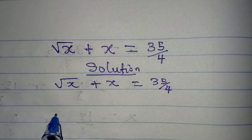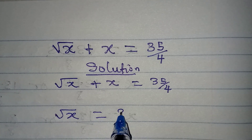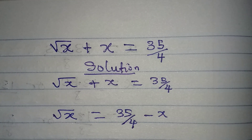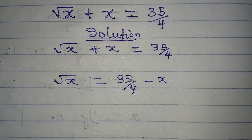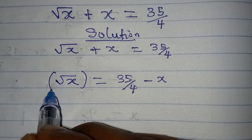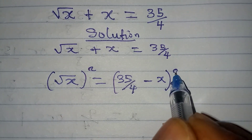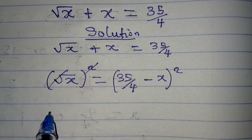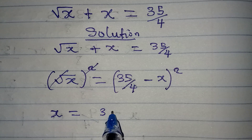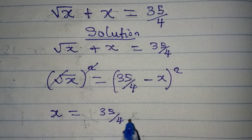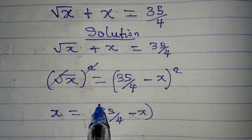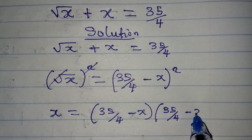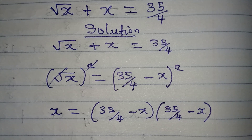So we have square root of x equal to 35 over 4 minus x. The next thing is to square both sides — the square and square root cancel — so x equals (35/4 minus x) squared, written out as (35/4 minus x)(35/4 minus x).